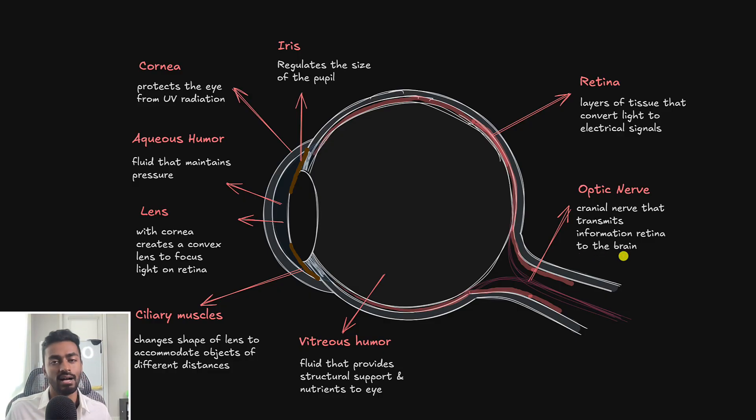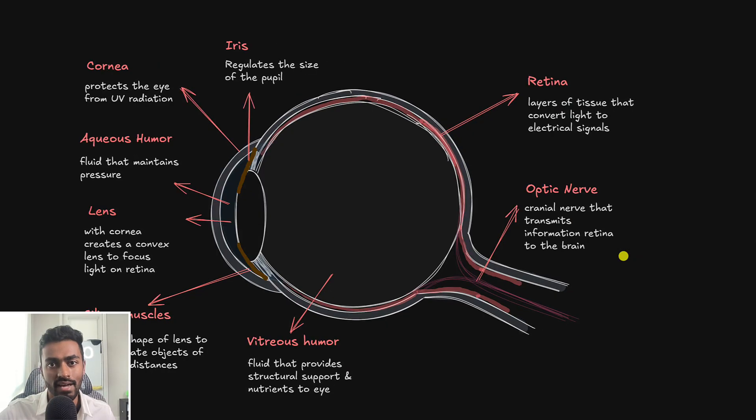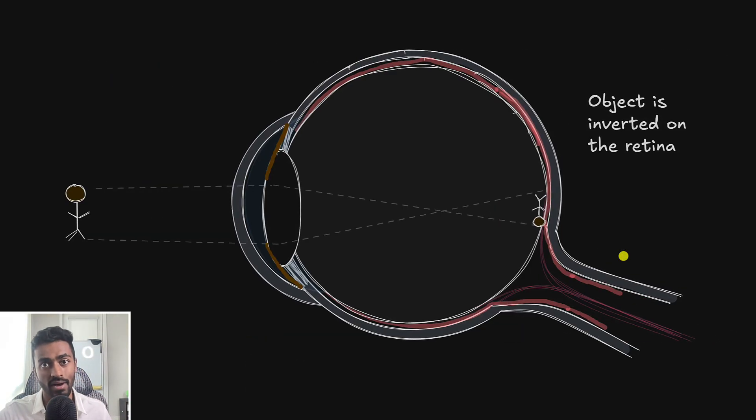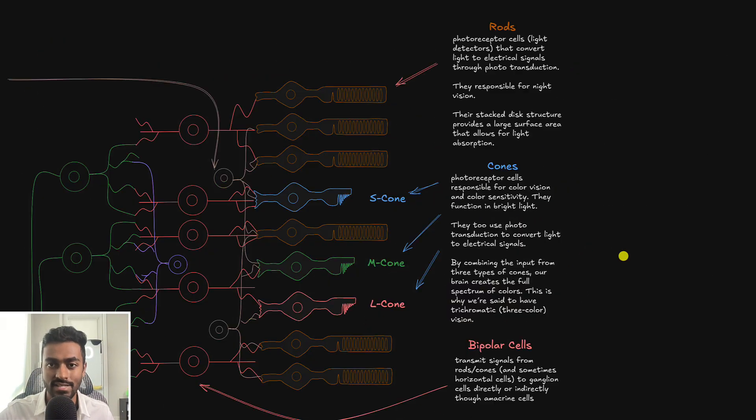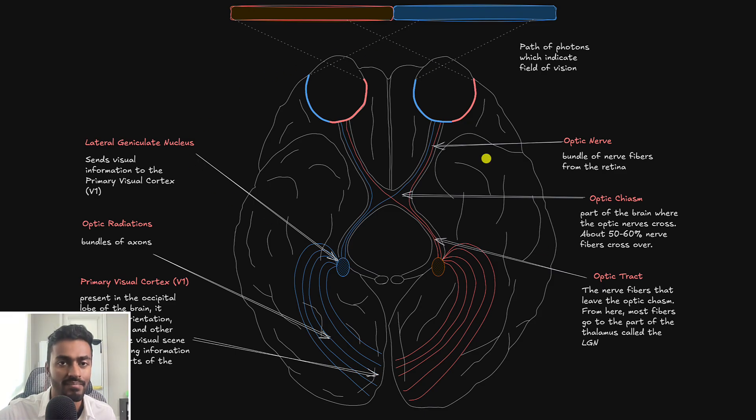So now that we saw the path a signal takes in the eye, let's actually look at how it goes to the brain via a nice cross section that we see over here. So in this cross sectional image, we can see that this here is like the eyes, right? This is going to be just a visual scene that the person is viewing. And this is the front of the brain, this here is the back of the brain. So let's just take a look at what's going on over here.